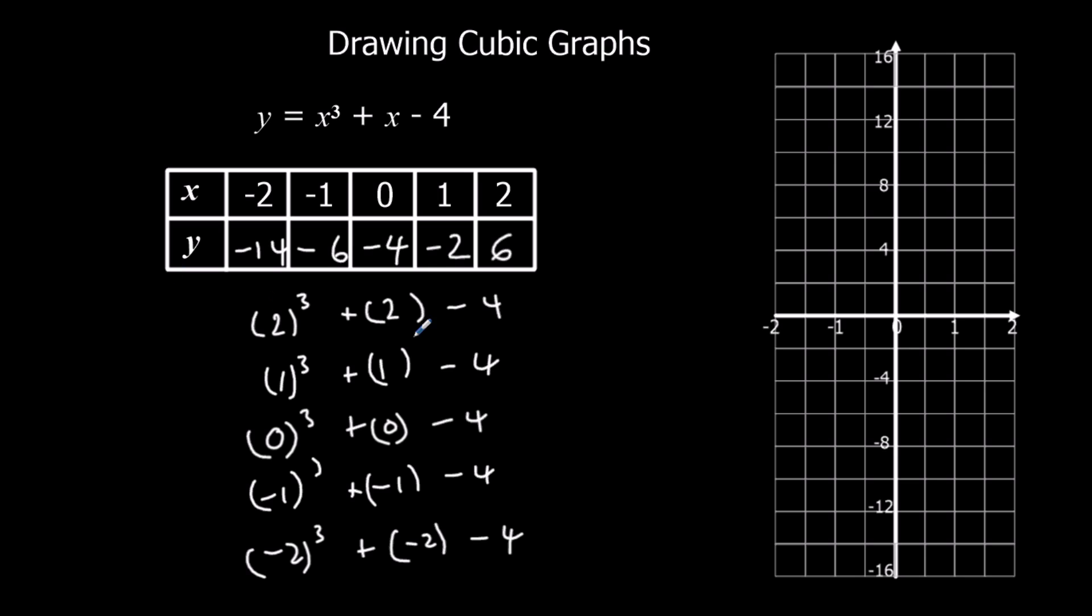So again, plot that on the graph. 2, 6. 1, minus 2. 0, minus 4. Minus 1, minus 6. Minus 2, minus 14. And again, we've got the same kind of shape. It's a nice curve.